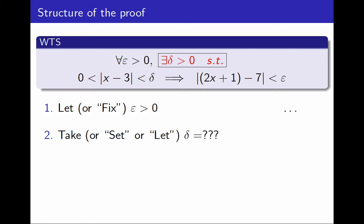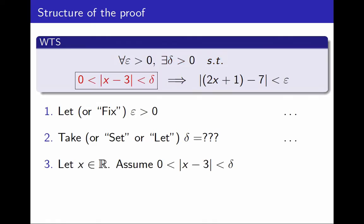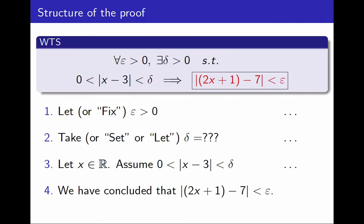And then I need to prove an implication. So I will assume the if part, I fix a generic real number, and I assume the distance between x and 3 is between 0 and δ, and after doing some math, hopefully I can conclude that the distance between 2x plus 1 and 7 is smaller than ε. And that should be the structure of the proof.